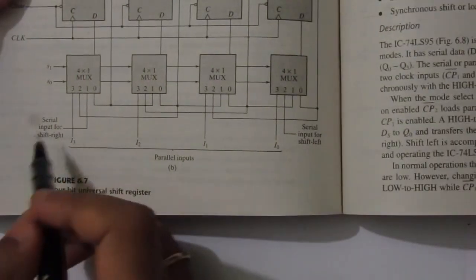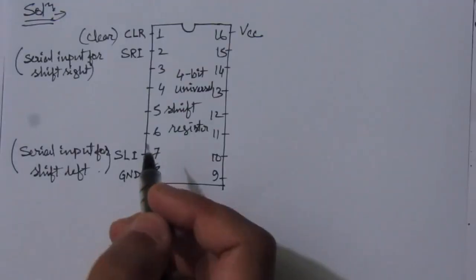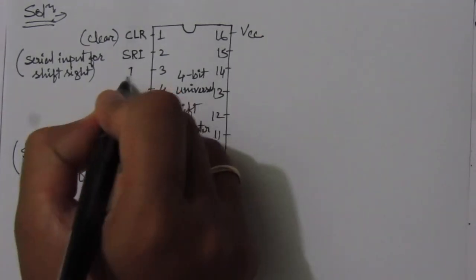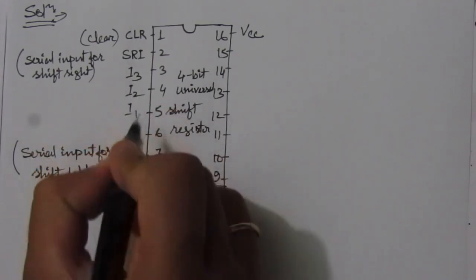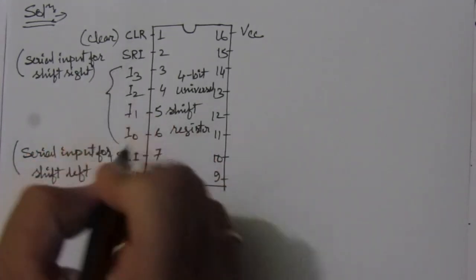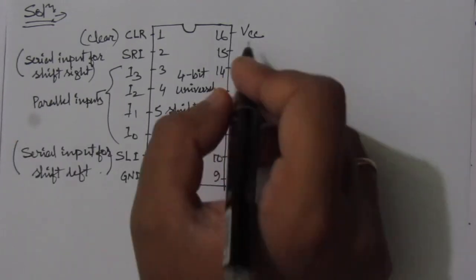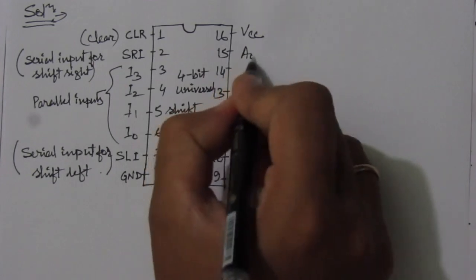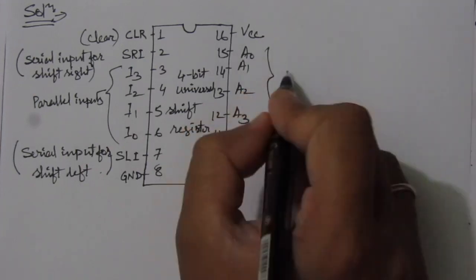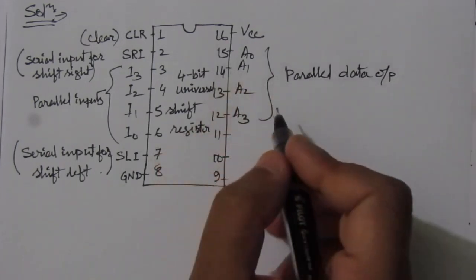Next, we define the input pins I3, I2, I1, and I0 — these are the parallel inputs from figure 6.7. On the right-hand side, we define the parallel data outputs: A0, A1, A2, and A3. These four ports are for the parallel data output.